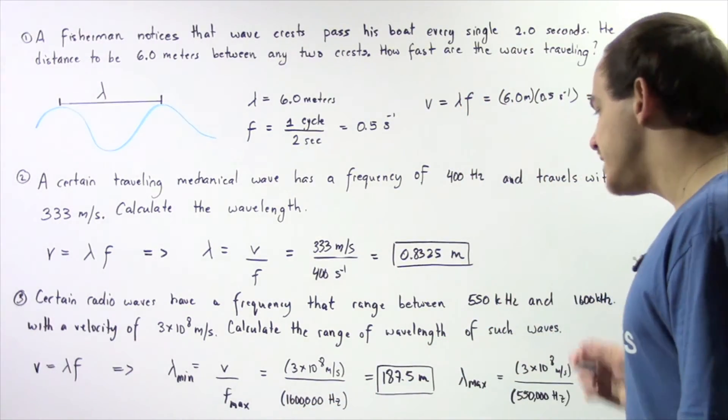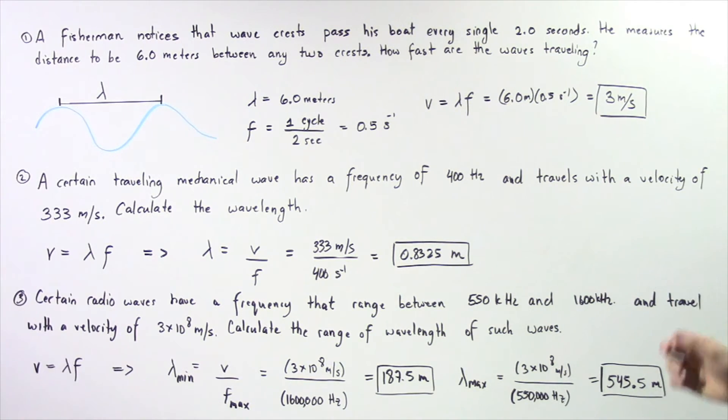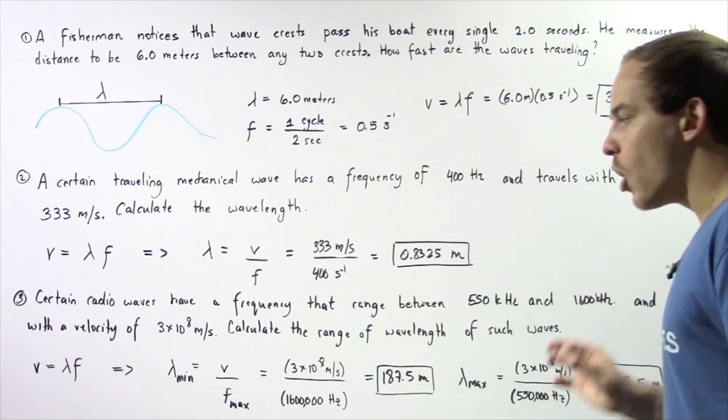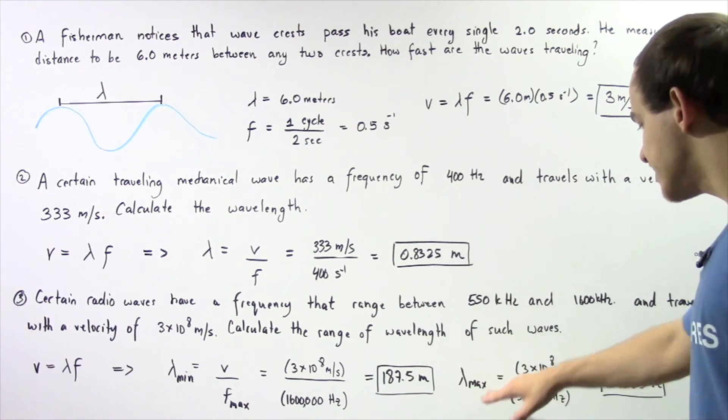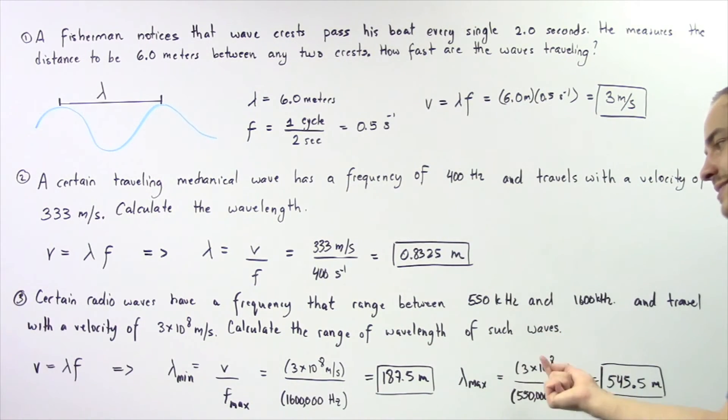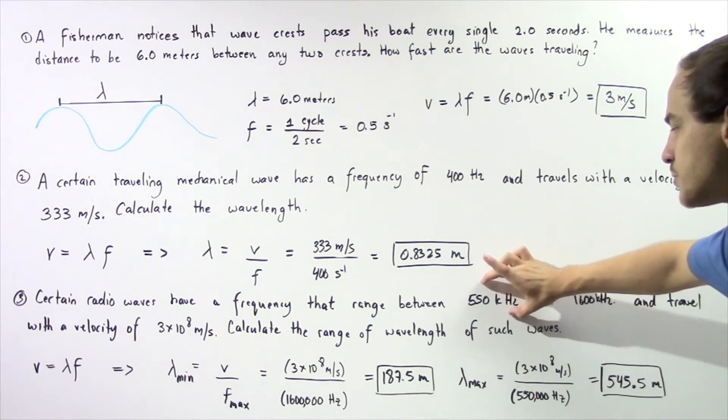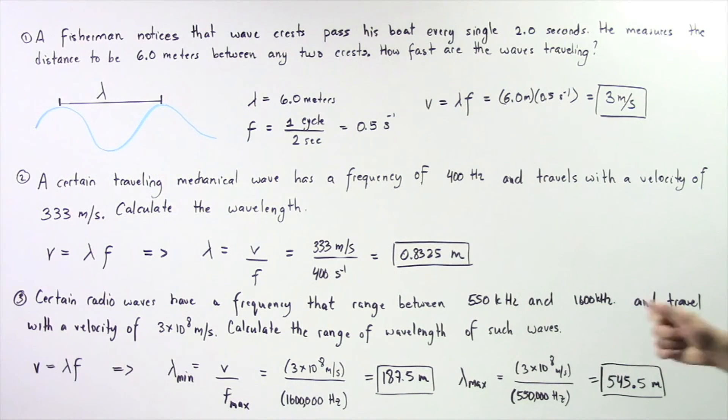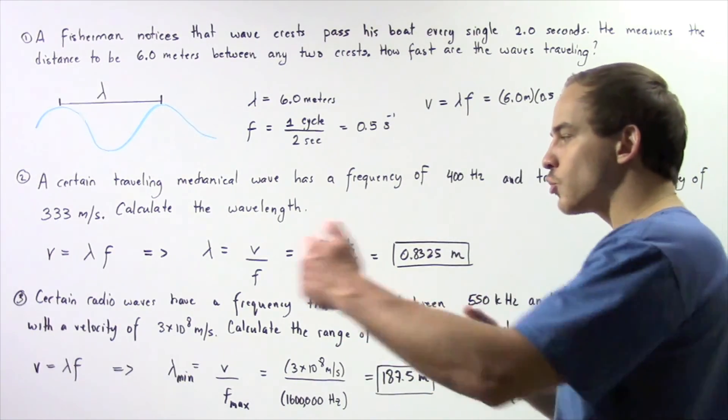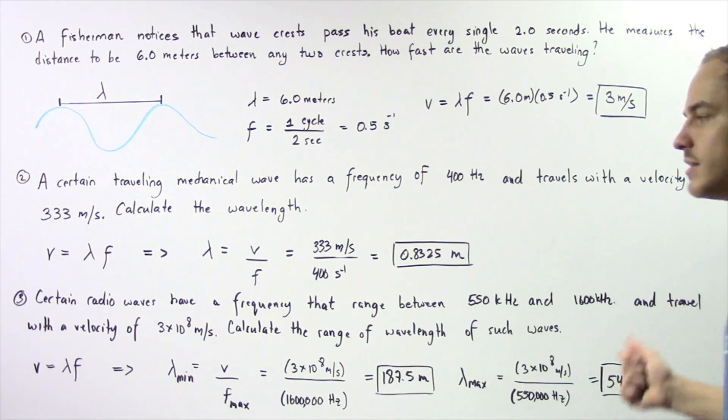We divide these two values and we get 187.5 meters is the smallest value of our wavelength. Now what about the maximum wavelength? Lambda maximum is equal to our velocity which remains constant divided by the smallest possible frequency value. So 550 multiplied by 1000 gives us the following quantity in hertz. So we divide these two values and we see that our largest possible wavelength is given to be 545.5 meters. So this is the minimum distance from crest to crest, and this is the maximum distance from crest to next consecutive crest.